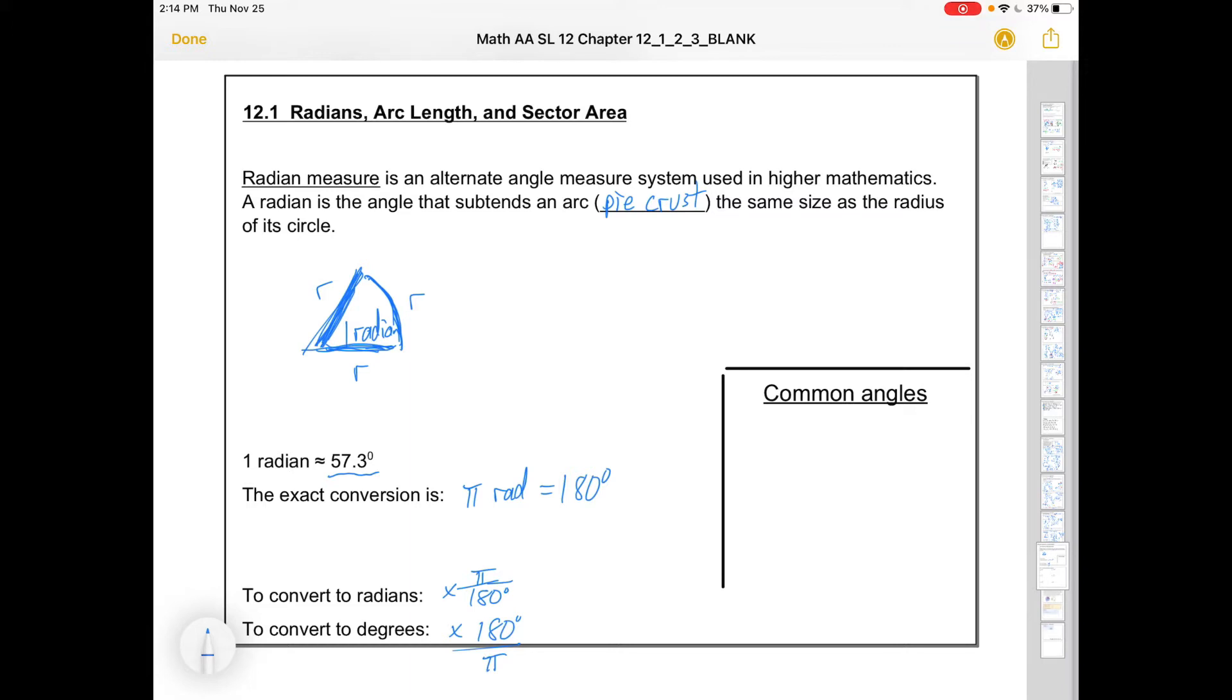I think it's important to know some common angles. Pi is 180, that means pi over 2 is 90 degrees, pi over 3 is 60 degrees, pi over 4 is 45 degrees, and pi over 6 is 30 degrees. There are infinitely many angles in both degrees and radians, but these are some we'll see a lot of.